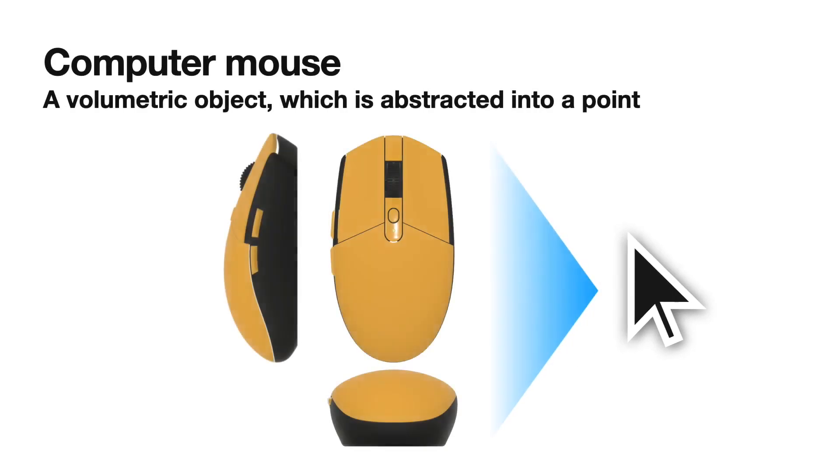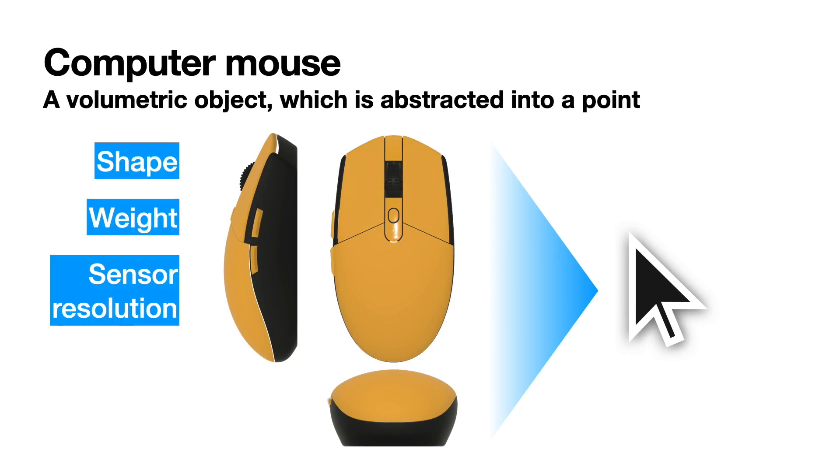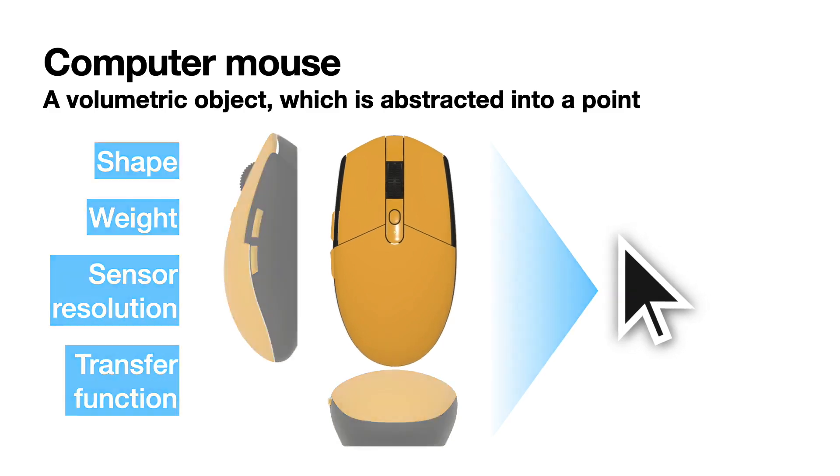Physically, a computer mouse is a volumetric object having certain size, which should be abstracted into a point. We already know various physical factors affecting pointing performance.